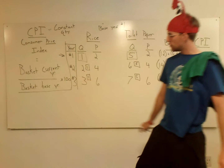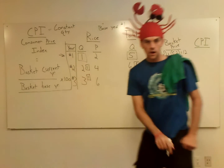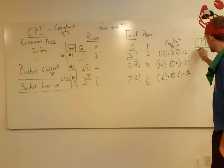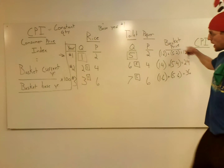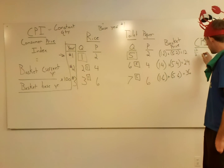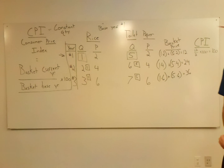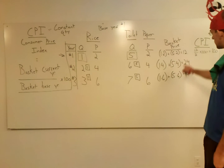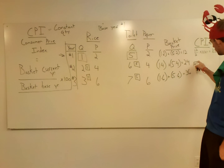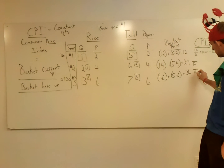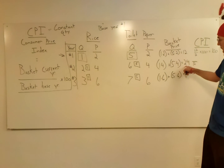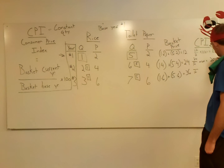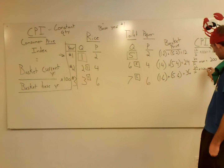So we've got to figure out CPI. What you've got to do: take the basket cost in the current year, put it over the base year, and multiply by one hundred. For year one, our basket price is twelve — the current year is also the base year — so it's twelve over twelve times one hundred, which equals one hundred. The basket price in the base year is always twelve, so you always make the bottom twelve. For year two, it's twenty-four over twelve times one hundred, which equals two hundred. For year three, it's thirty-six over twelve times one hundred, which equals three hundred. The CPI should come out pretty easily.